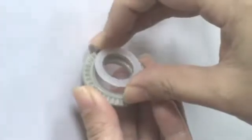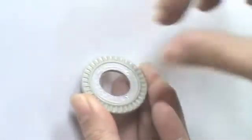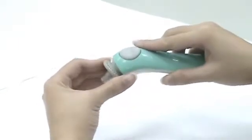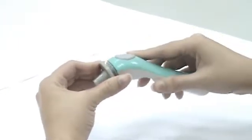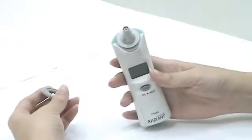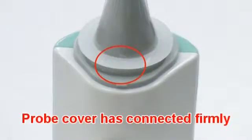Place the probe cover into the connection ring. Align the probe with the center of the probe cover. Insert and push the connection ring until you hear a click sound. The probe cover has connected firmly.